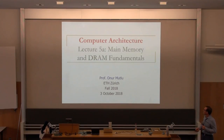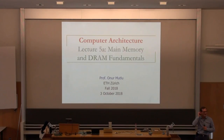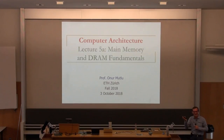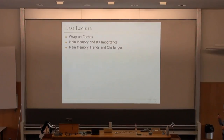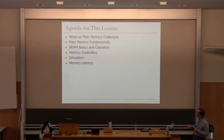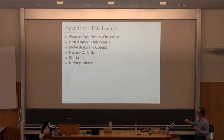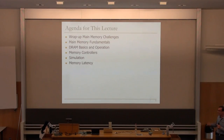Feel free to ask questions. Last time, somehow my brain was programmed to end the lecture at 2:30, but it was supposed to end at 3. So there's another error mechanism. It's good to understand these error mechanisms, and that's true for memory as well as everywhere. So what are we going to cover? Last lecture we wrapped up caches, talked about main memory and its importance, and main memory trends and challenges. We're going to continue: wrap up main memory challenges, DRAM basics and operation, then memory controllers, simulation, how to evaluate ideas, and then memory latency.